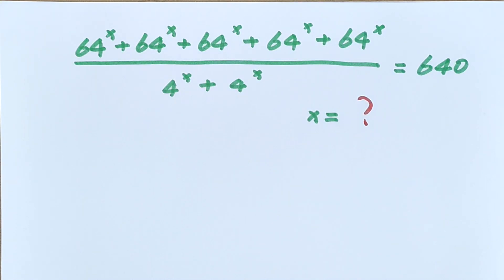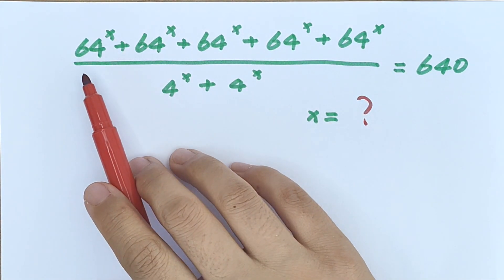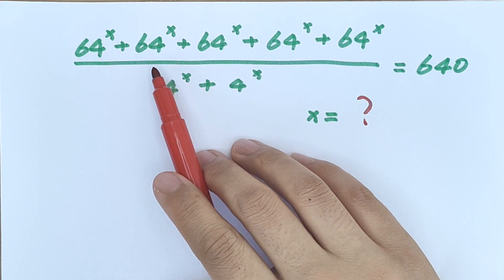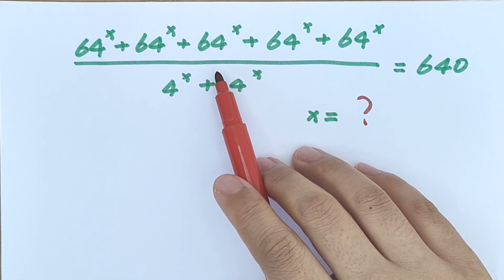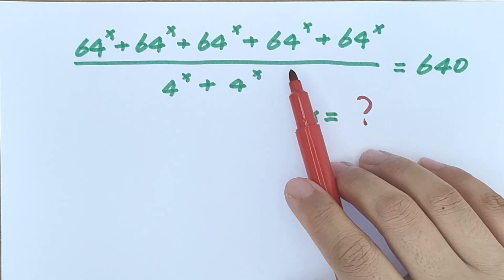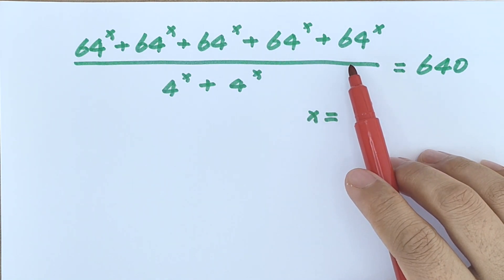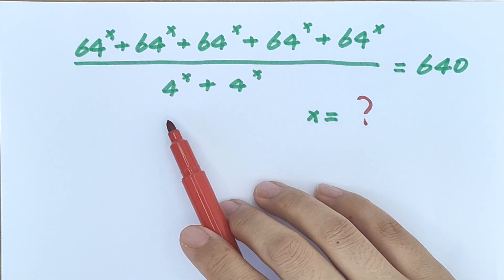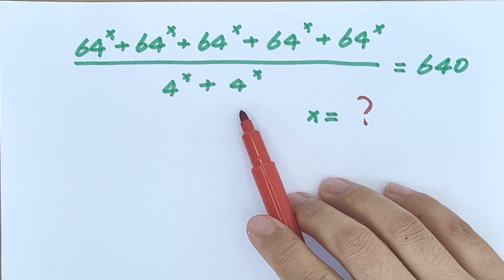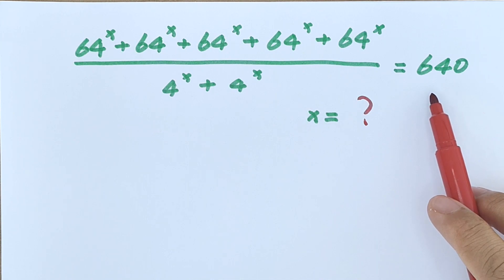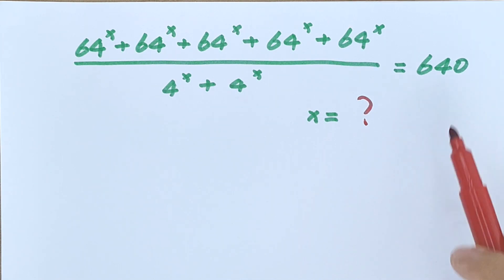Hello everyone, welcome to Math4U. How to solve: 64 to the power of x, plus 64 to the power of x, plus 64 to the power of x, plus 64 to the power of x, plus 64 to the power of x, divided by 4 to the power of x plus 4 to the power of x, equals 640. We need to find the value of x.